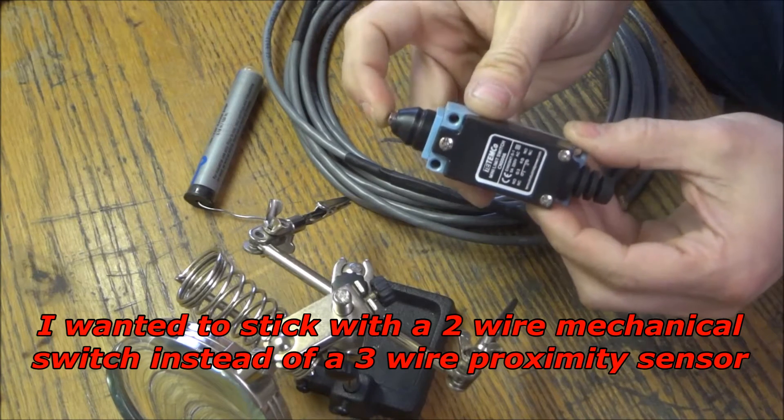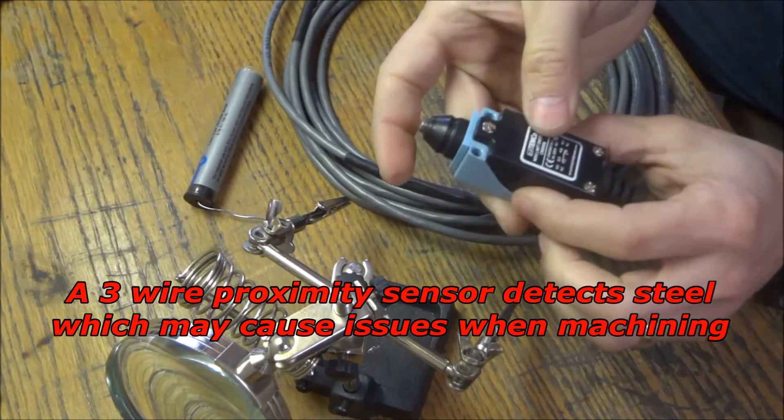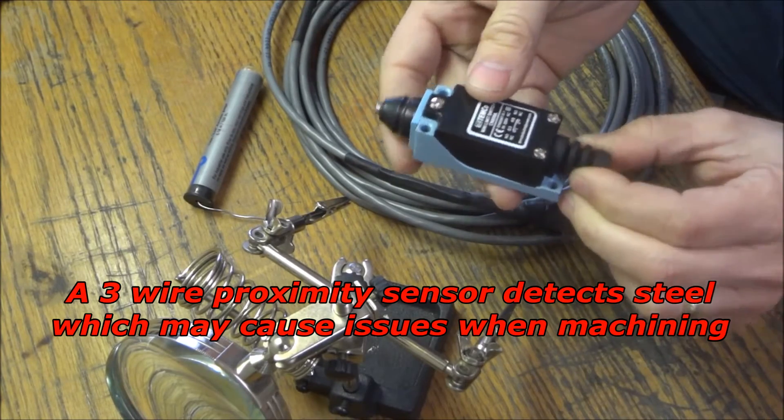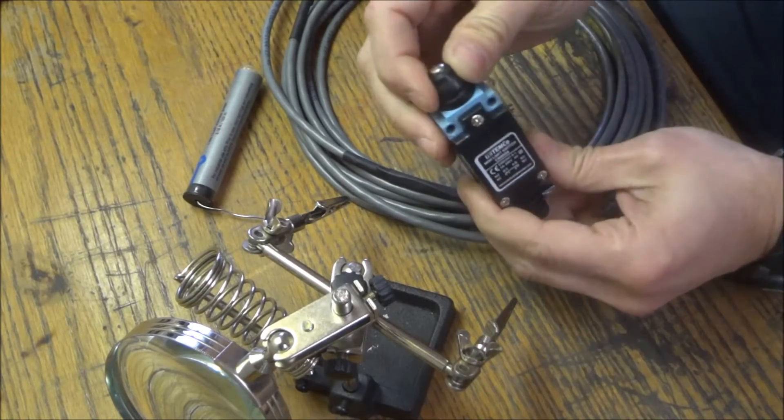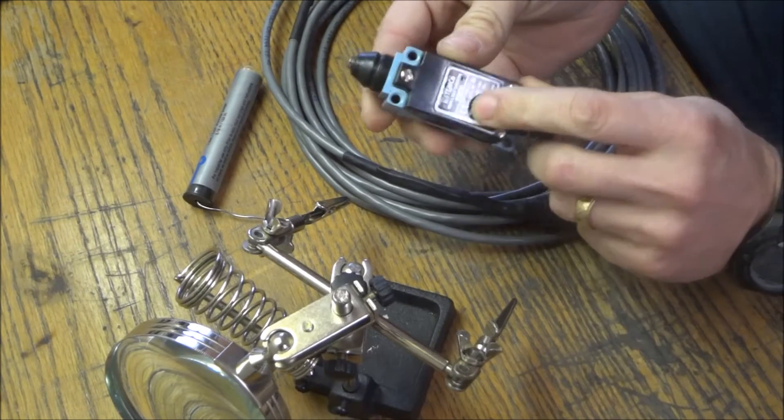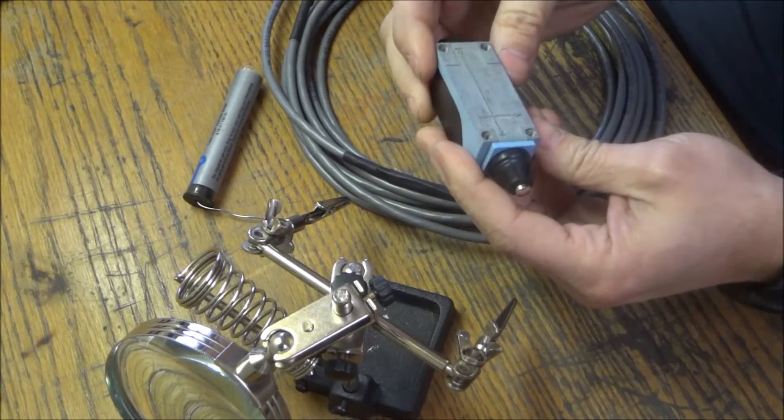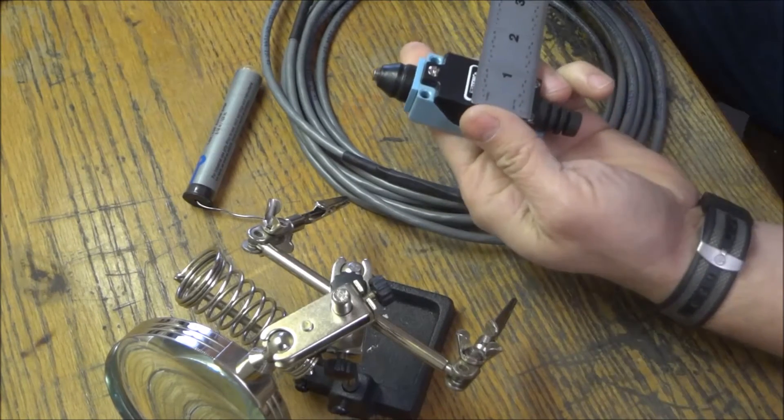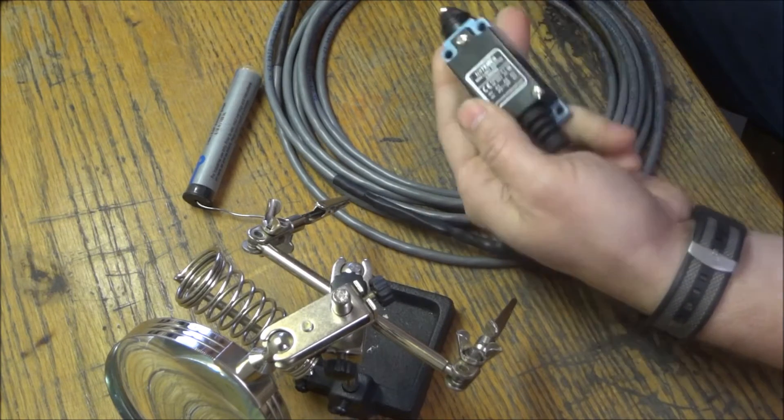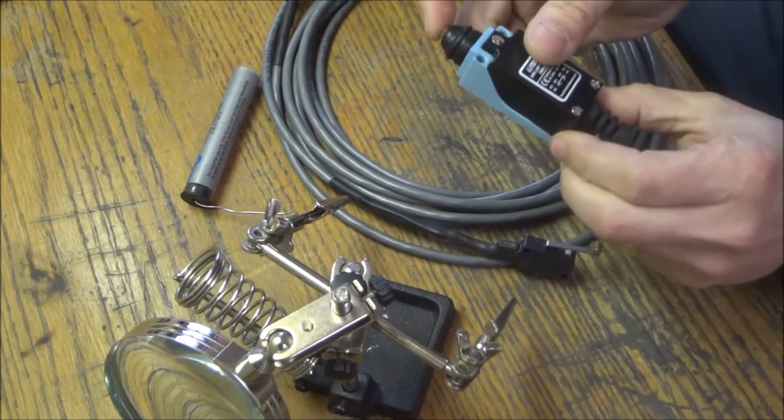Now these have a gasket. They're not rated as waterproof but they're supposed to be water resistant. They have this nice rubber boot here and here, and they're supposed to be water resistant, so we're gonna give these a shot. They're not too big, they're about an inch and eighth by say four inches from here to here. But they're a little bit more industrial than the little limit switches and I think they'll work out just fine.